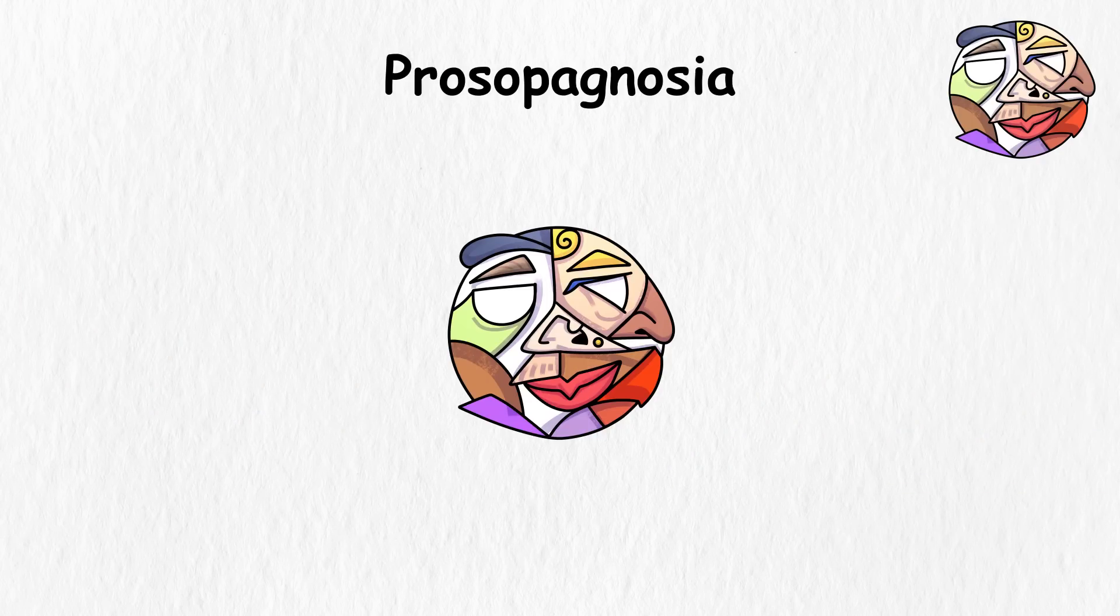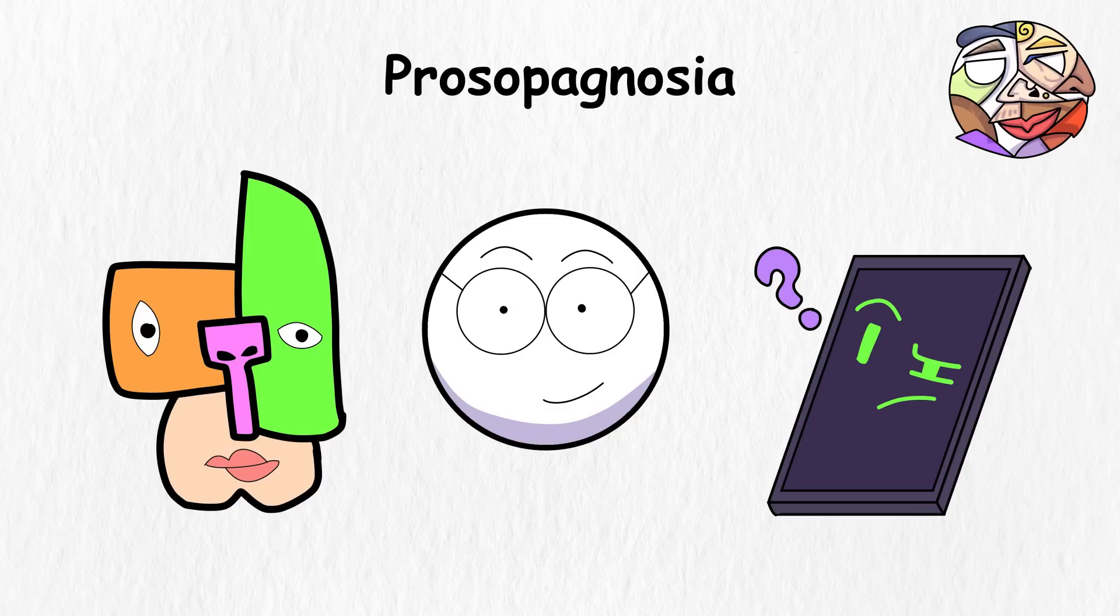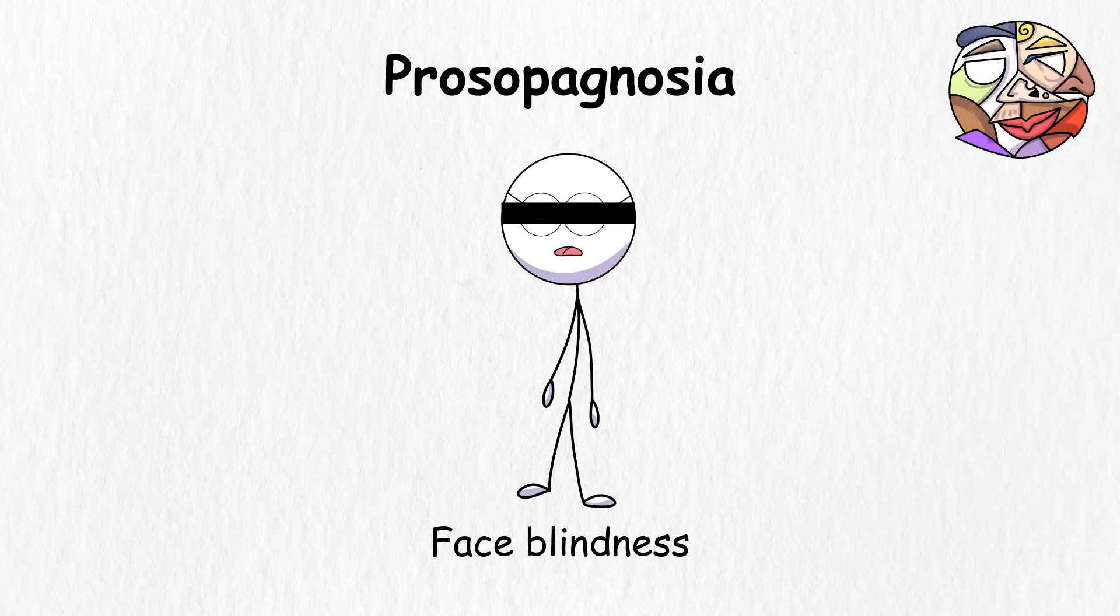Prosopagnosia. Prosopagnosia is like your iPhone's face ID system going nuts, unable to recognize your face. If you suffer from this condition, everyone's face looks like Picasso's most abstract paintings. Prosopagnosia is called face blindness for a reason.